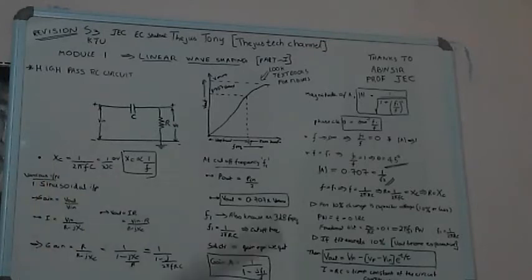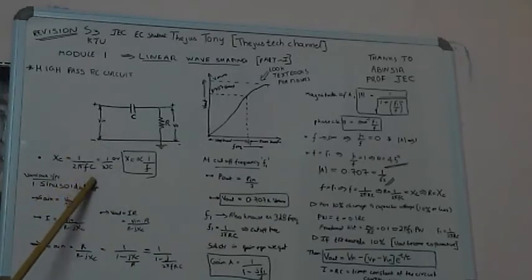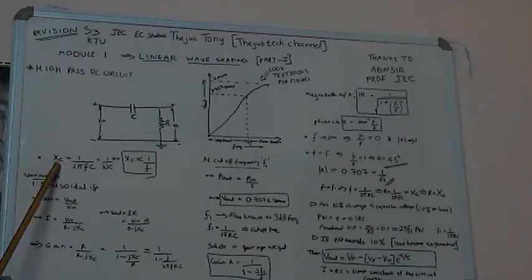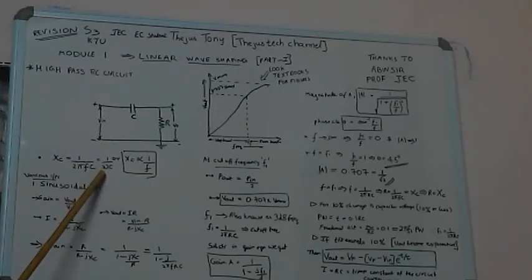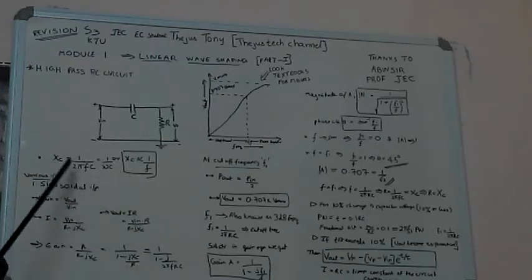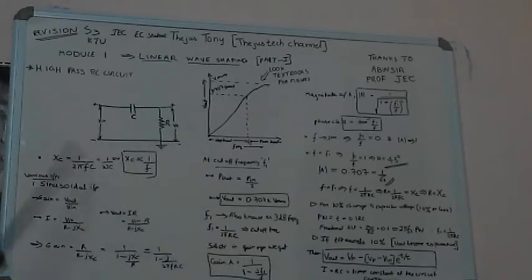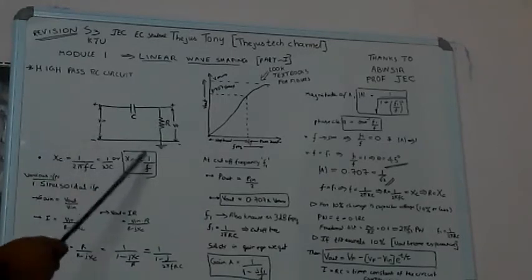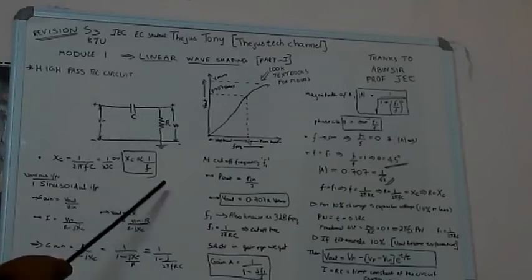We know that XC is the capacitive reactance. Capacitive reactance of this circuit is given by XC equal to 1 by 2πFC, where F is the frequency and C is the capacitance. This 2πF is omega. From this expression, we can know that XC is inversely proportional to F.